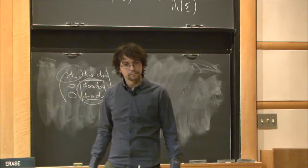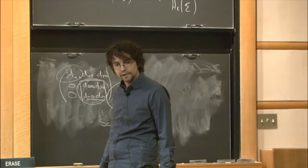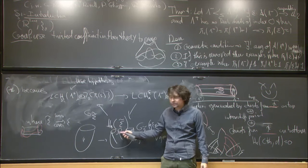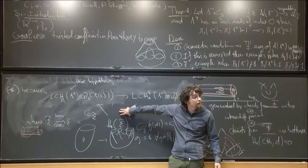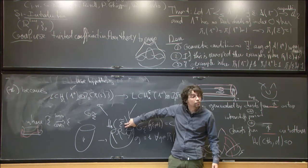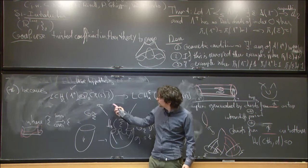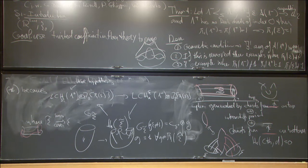Was it obvious that I needed twisted coefficients? Yes — without twisted coefficients, I can only extract information about the cobordism itself, not about its universal cover. I want H₀ of the universal cover to be trivial, meaning the universal cover has only one sheet. So I need to twist coefficients somewhere.